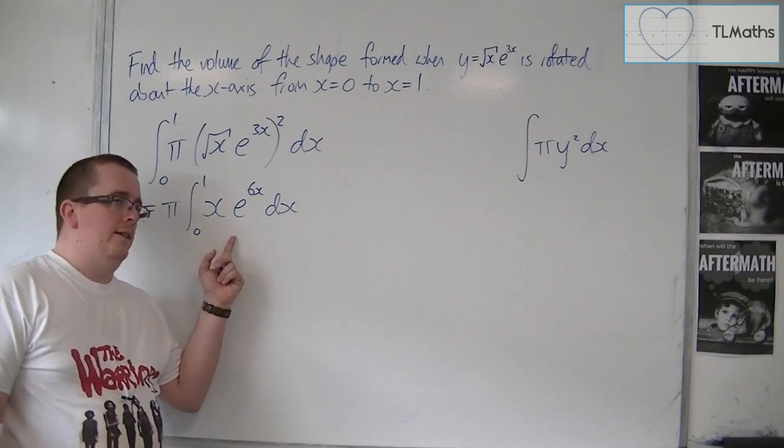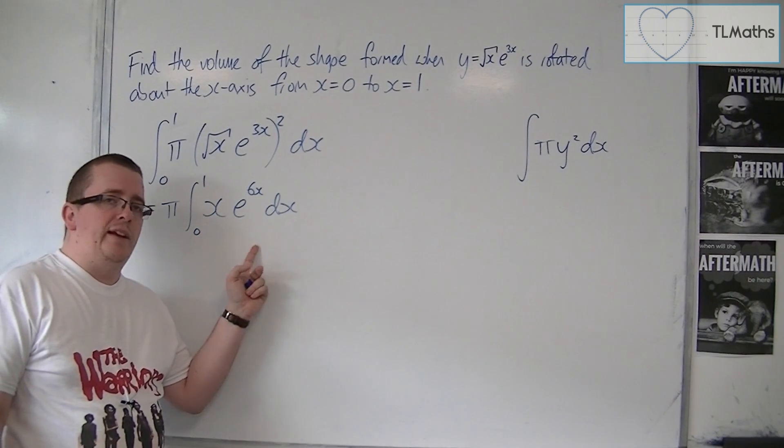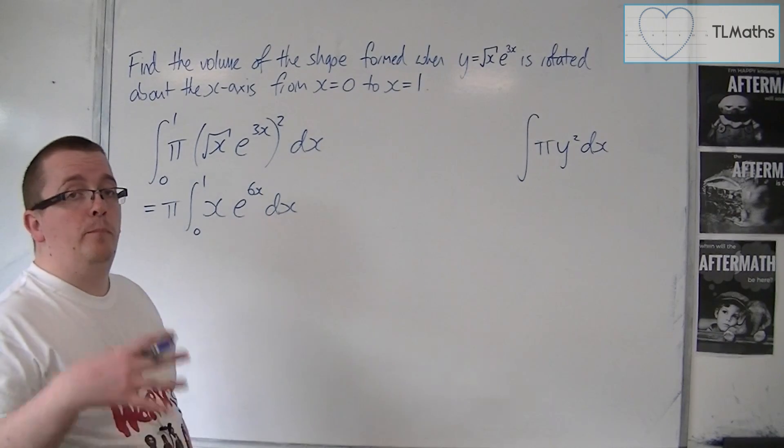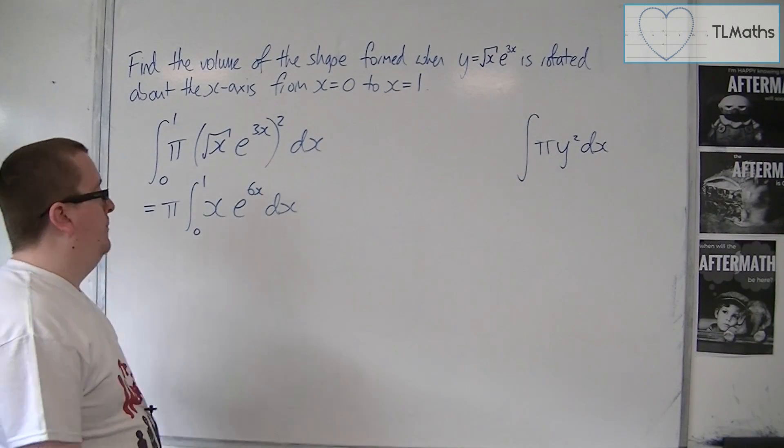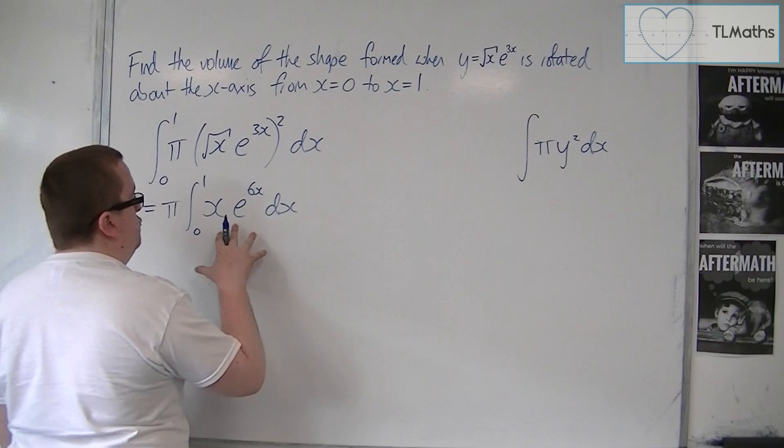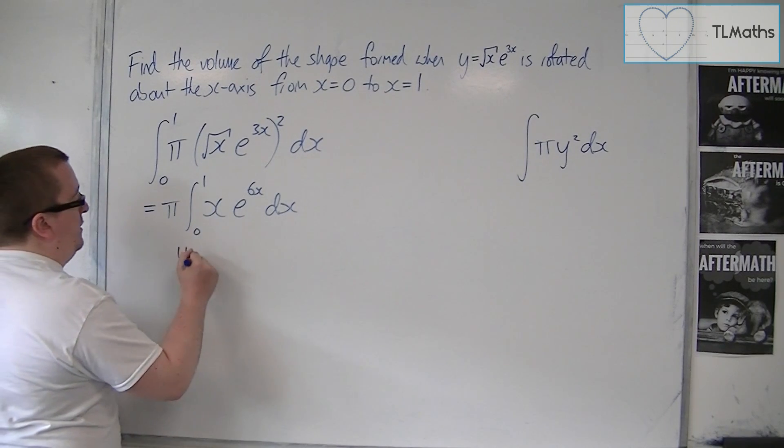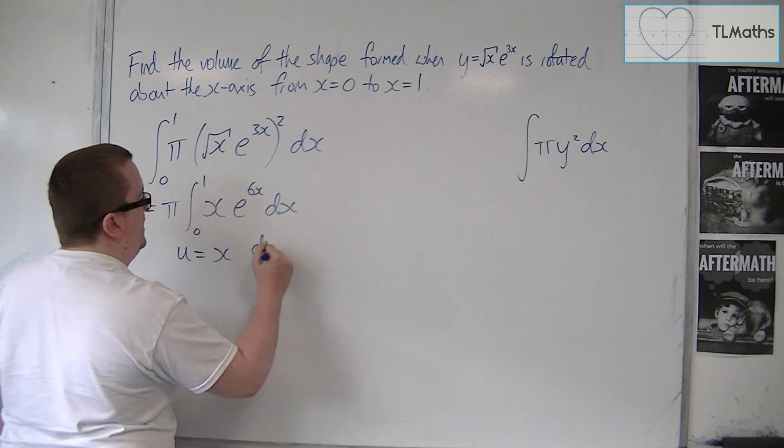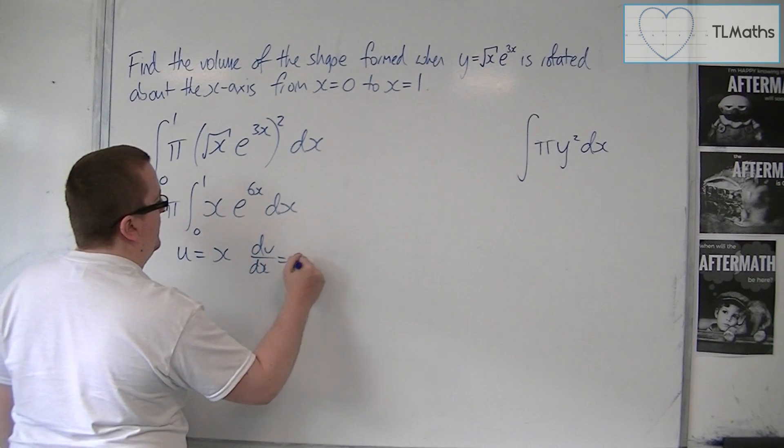Now, here, x e to the 6x has to be integrated using integration by parts. So, using the late rule, the x has to be the u, and the dv by dx will have to be the e to the 6x.